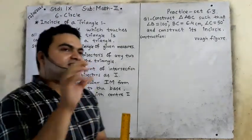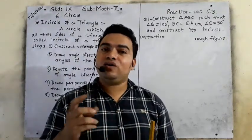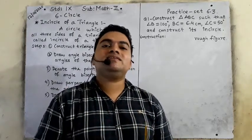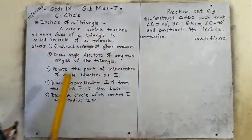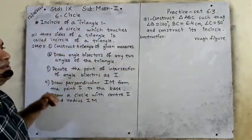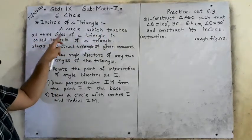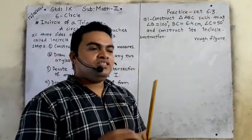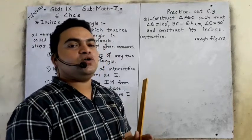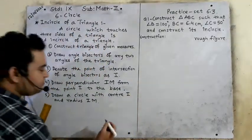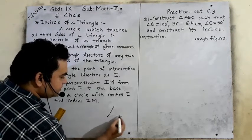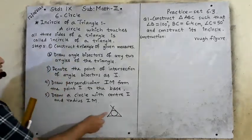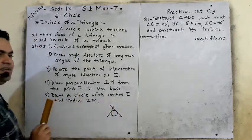By reading the name we can understand: we have to draw a circle inside the triangle. We first draw the triangle and inside the triangle we will construct a circle. So what is incircle of a triangle? A circle which touches all three sides of a triangle is called incircle of a triangle. For example, first we will draw the base, then the given angles, then we draw a circle which touches all three sides. This is called incircle of a triangle. Is it clear?